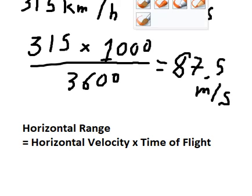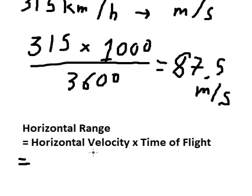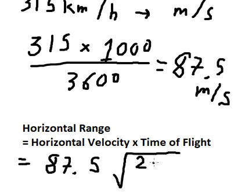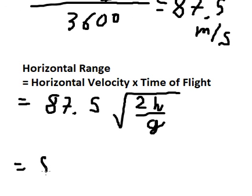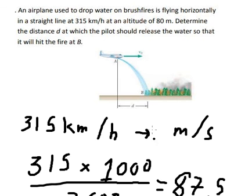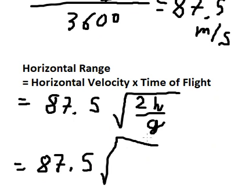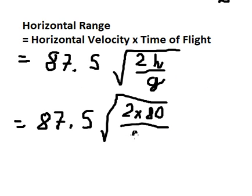The horizontal velocity is 87.5 multiplied by the square root of 2H over G. H is the height, which is 80 meters. And G is the gravitational force, which is 9.8.